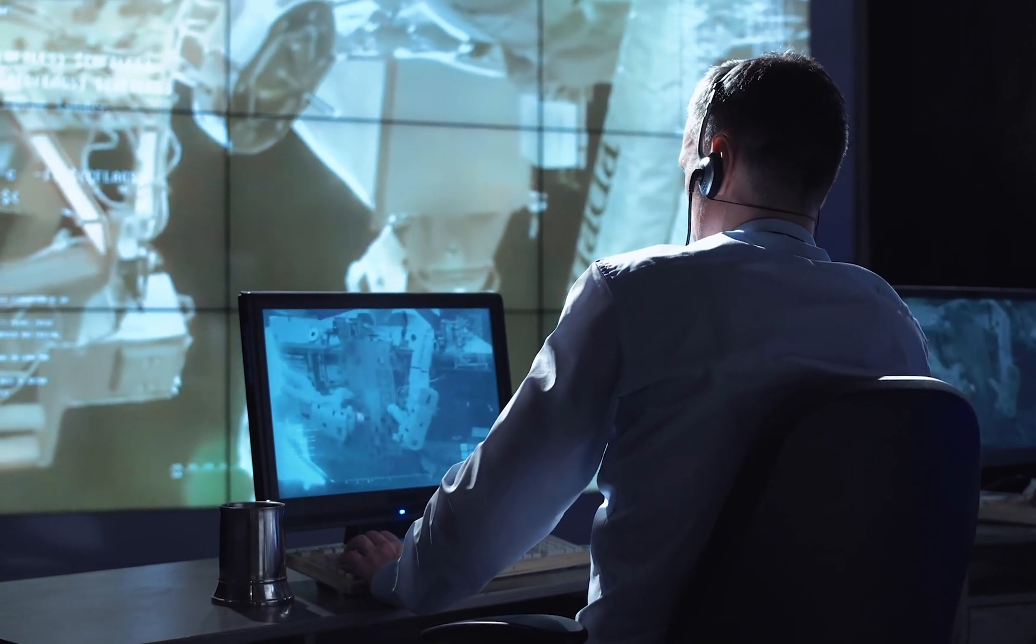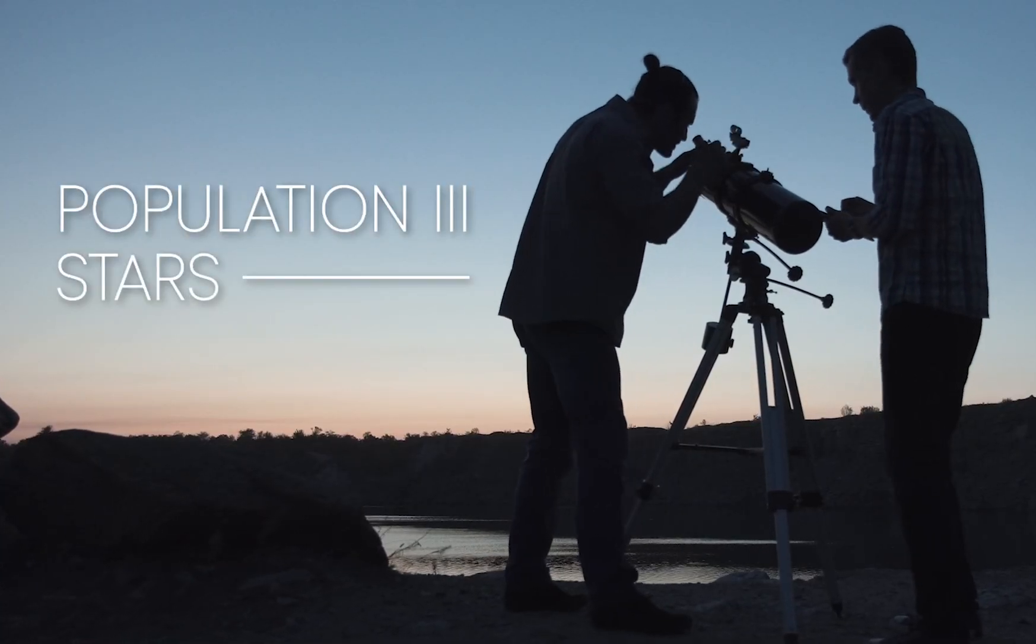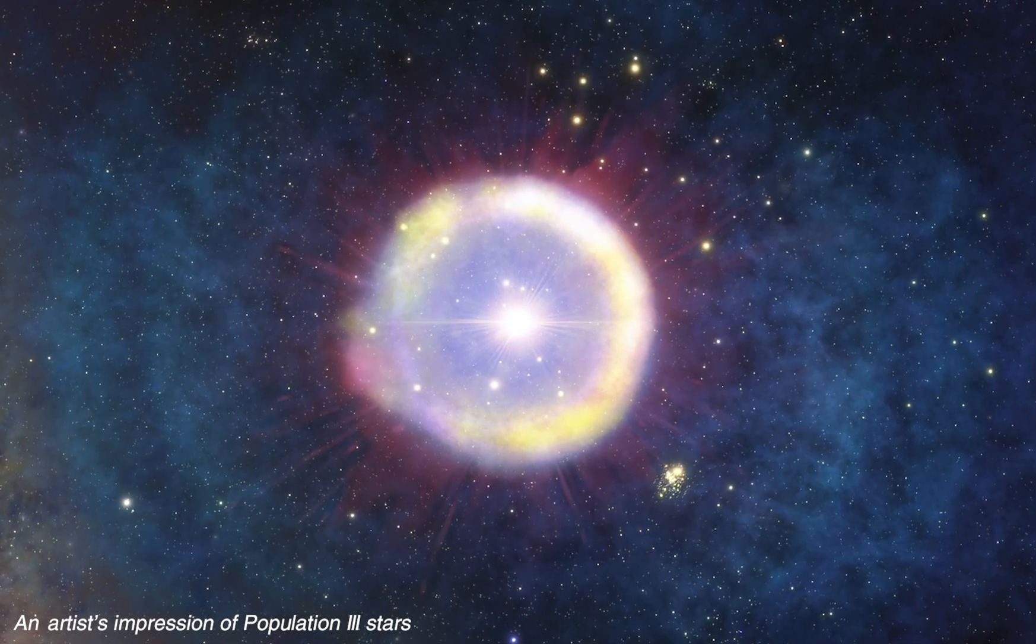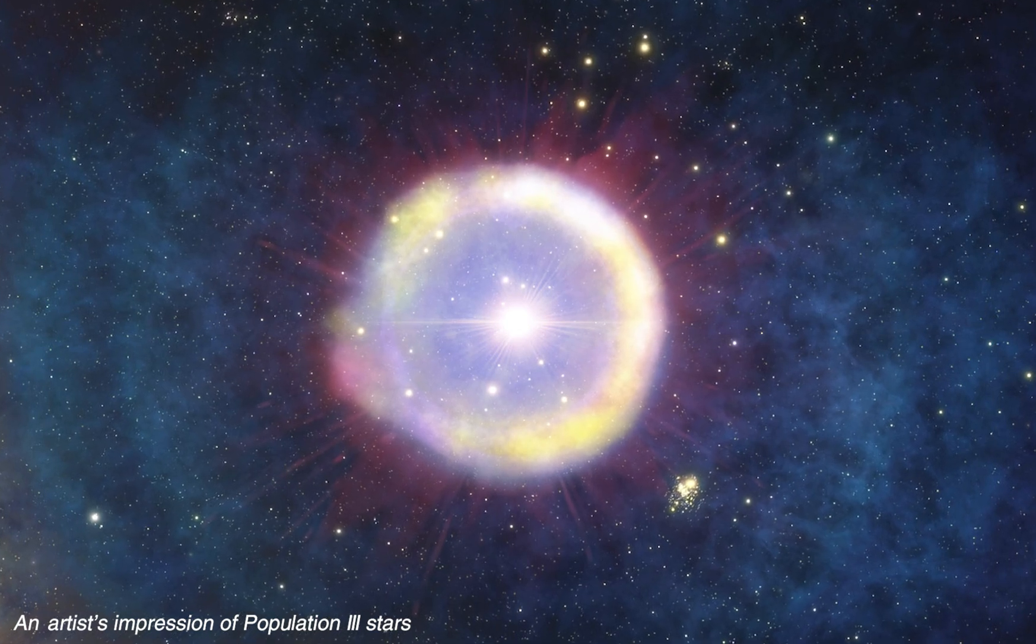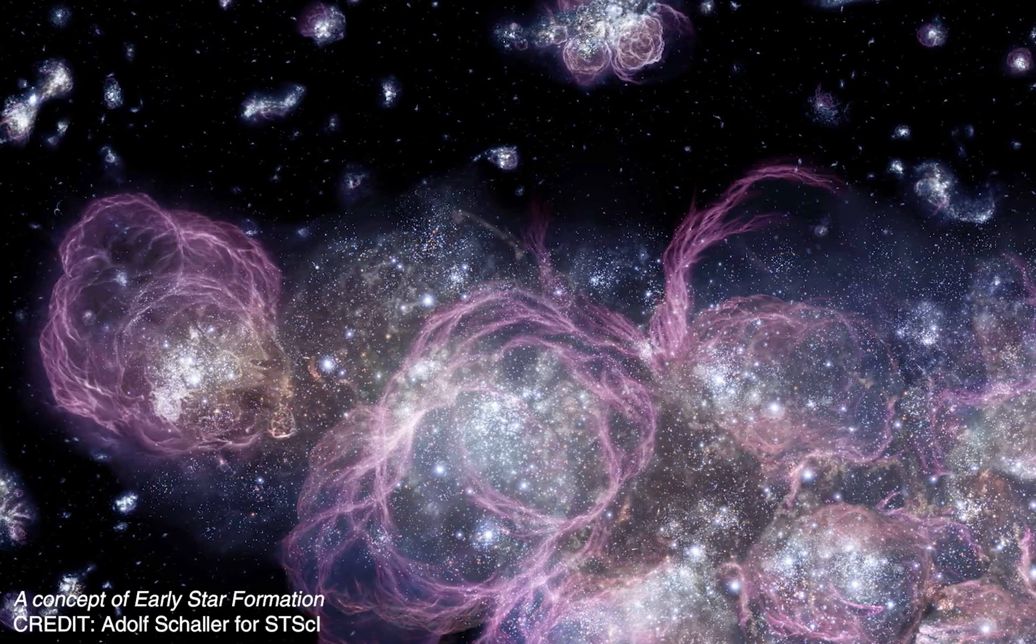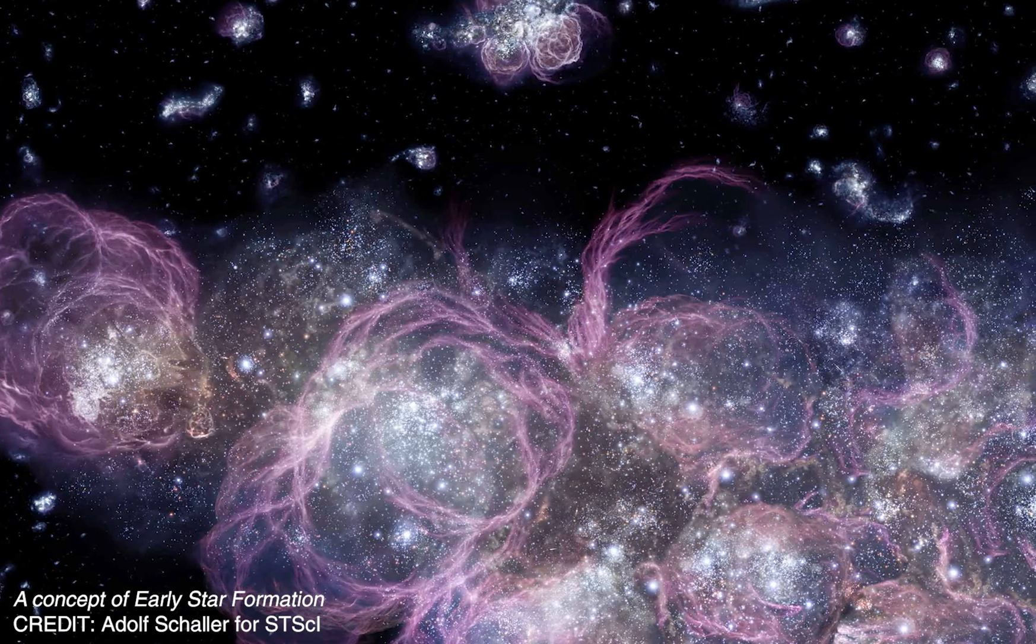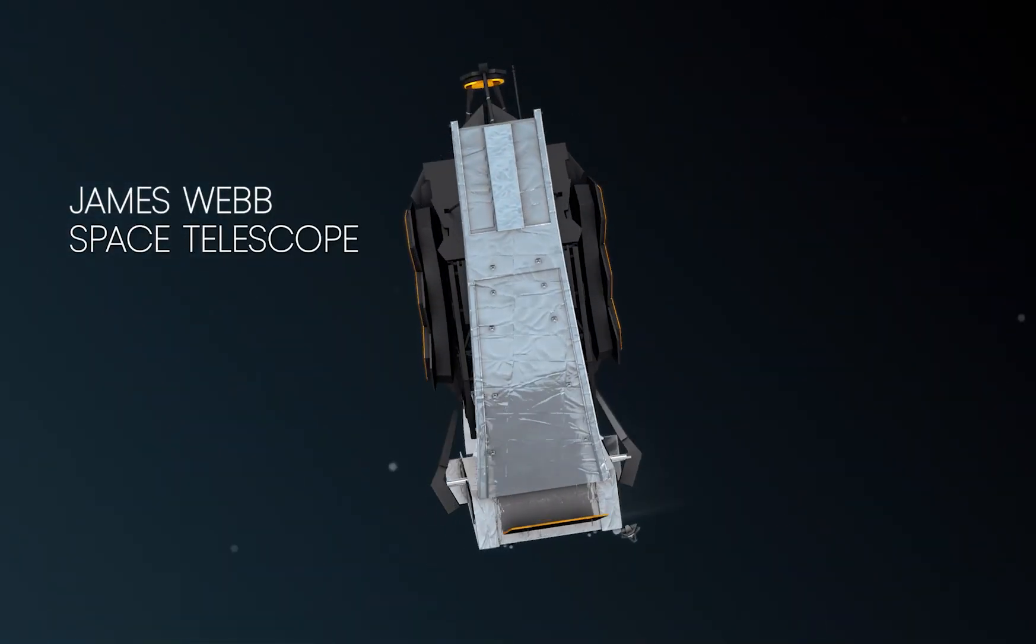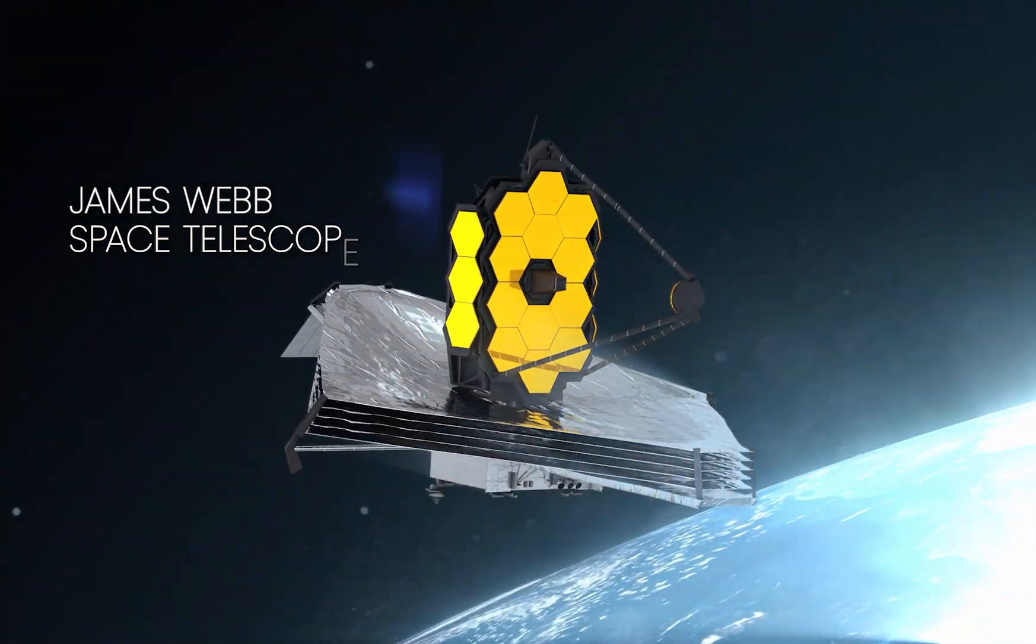Scientists have been on the hunt for the universe's first stars, called Population 3 stars, for a long time. These stars were believed to have formed about 400,000 years after the Big Bang and were thought to be made of hydrogen and helium gas from the early universe. These massive stars were thought to have exploded and created heavier elements, leading to the formation of Population 2 stars and eventually Population 1 stars like our Sun. Now, scientists are using the James Webb Space Telescope, JWST, to try and find these first stars.